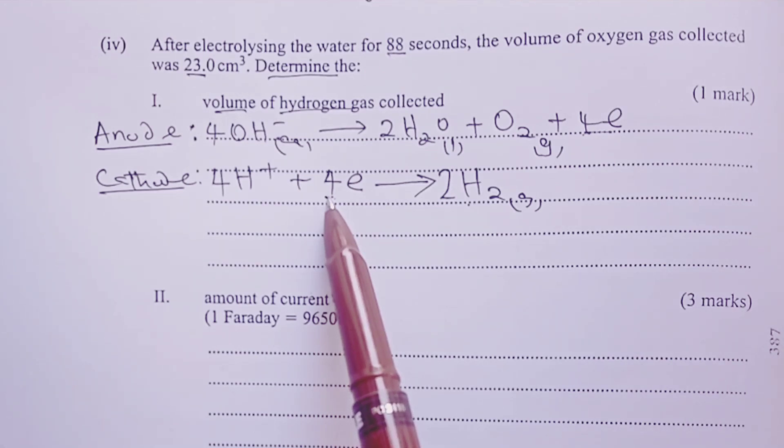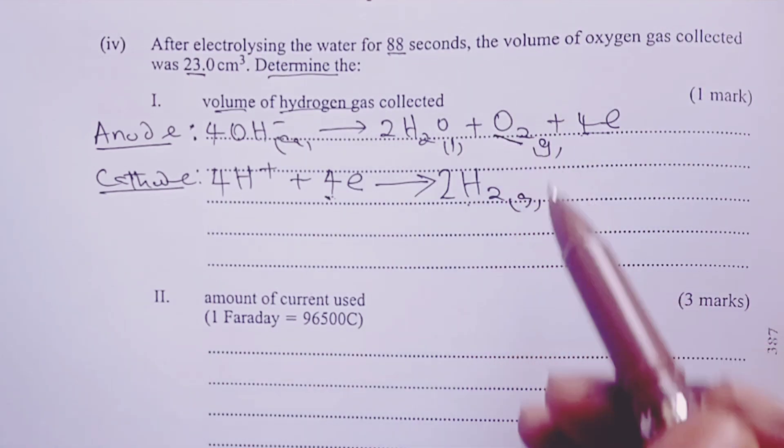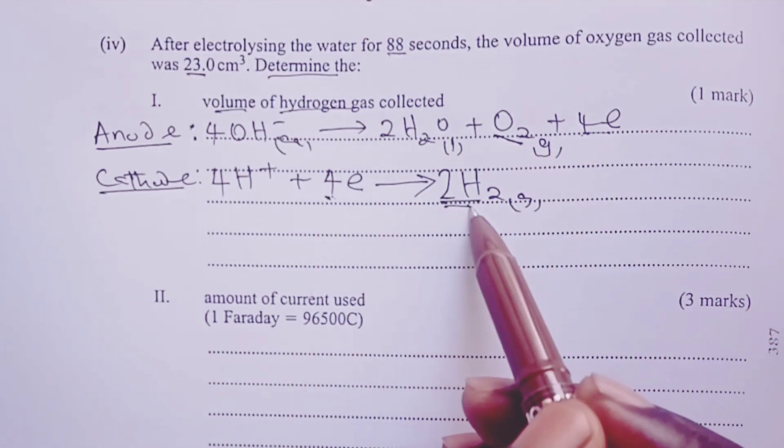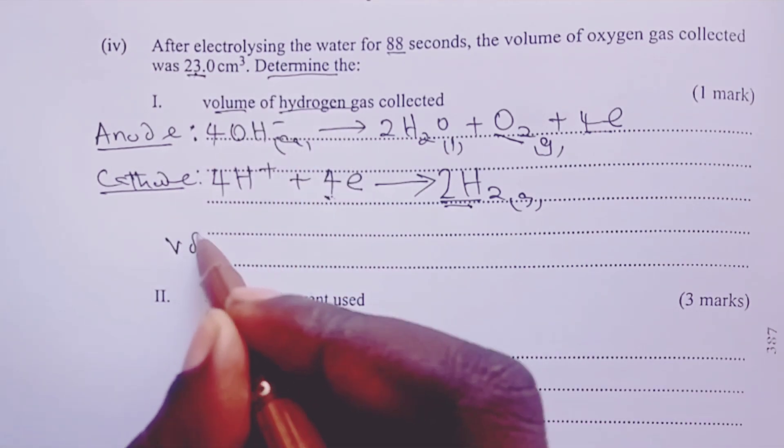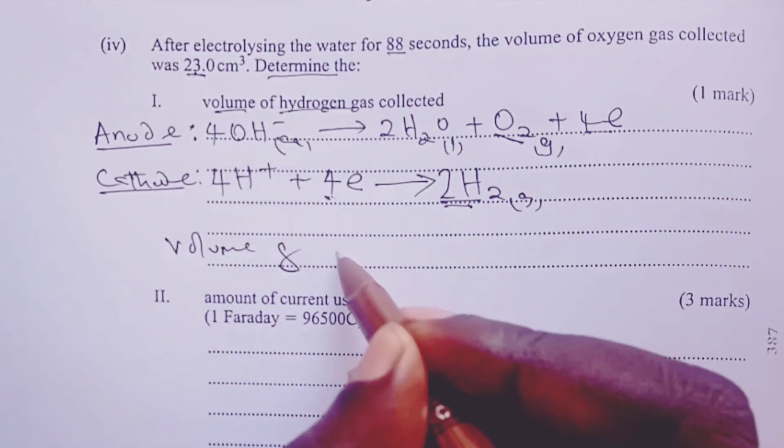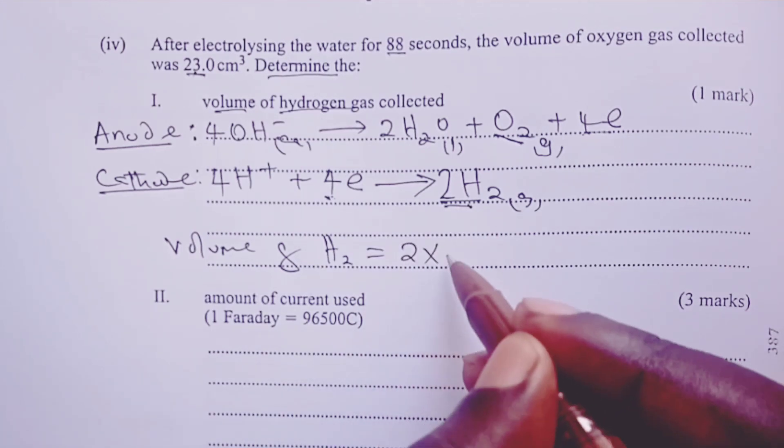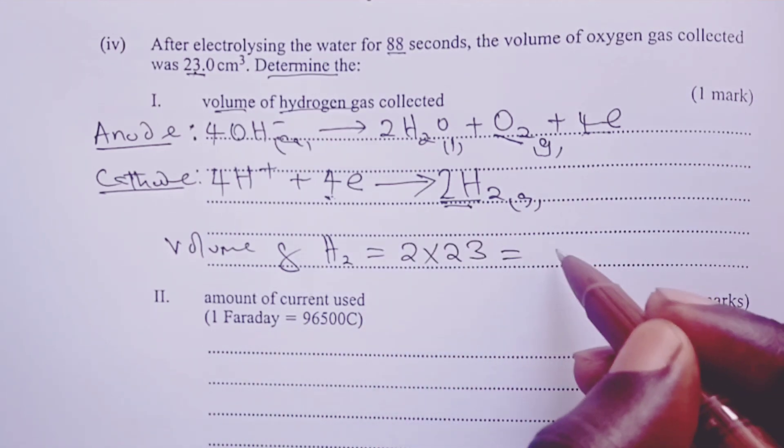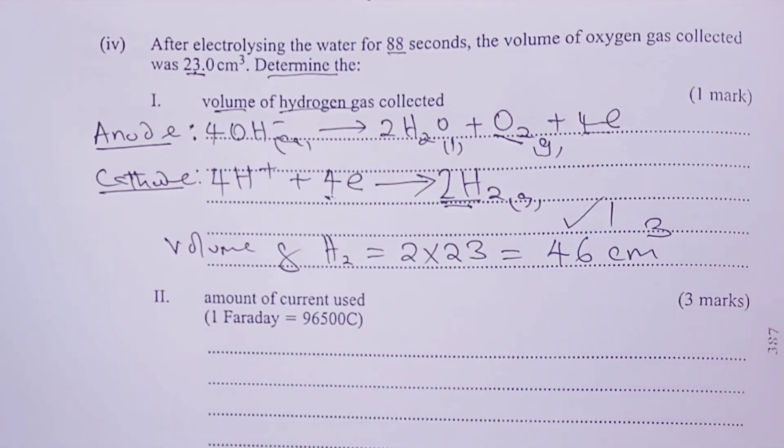Now, what we notice after this is, for every 1 mole of oxygen produced, we normally have 2 moles of hydrogen. So, if I have 23 cubic centimeters for oxygen, it means, therefore, that volume of hydrogen gas would be double, and that would be 2 times 23. And that gives me 46 cubic centimeters for the next mark.